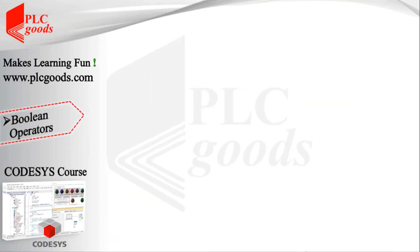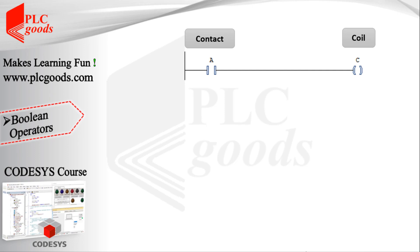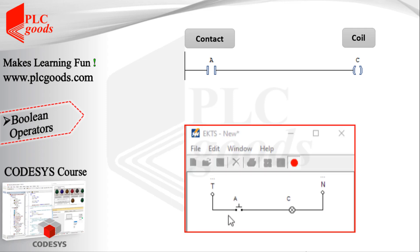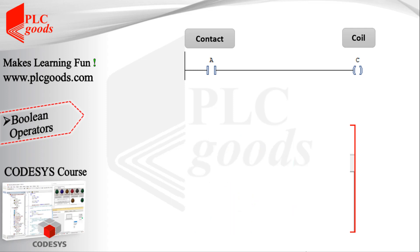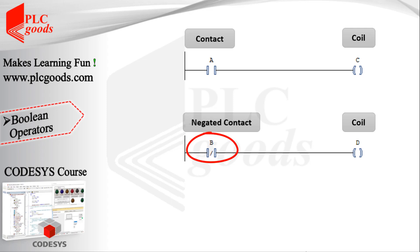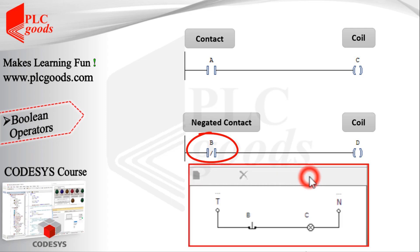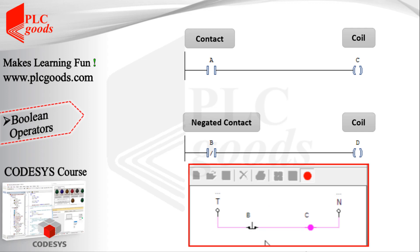If you remember, this simple ladder program which includes one simple contact and coil was tested at the end of the previous video. The ladder programming language has been inspired by ladder industrial circuits, and the performance of this program is the same as a simple electrical circuit. Similarly, the performance of a ladder program which includes a negated contact is equal to a circuit which used a normally closed push button.